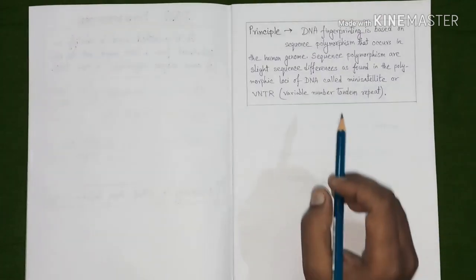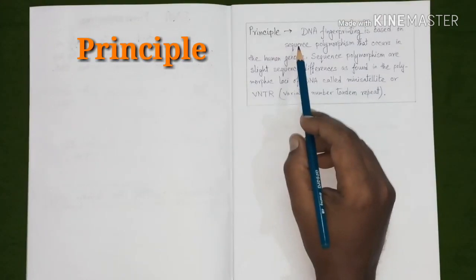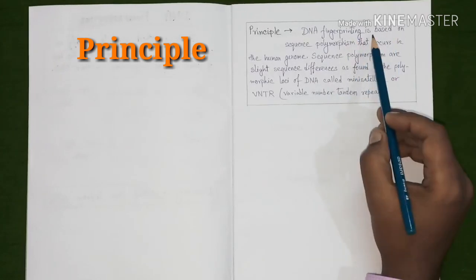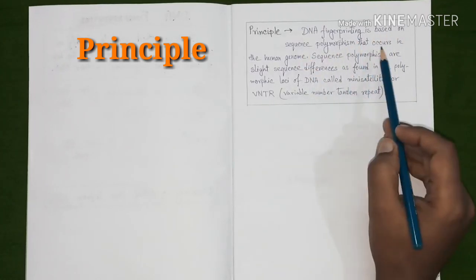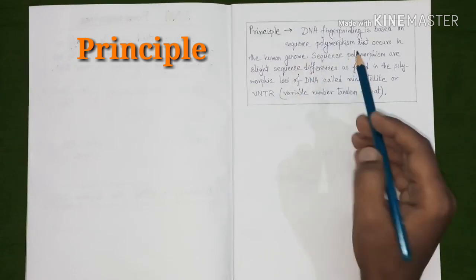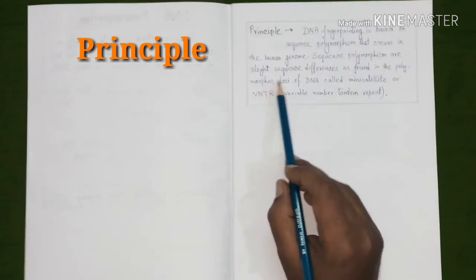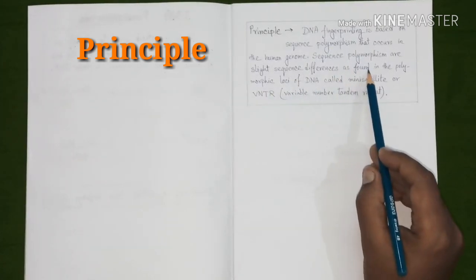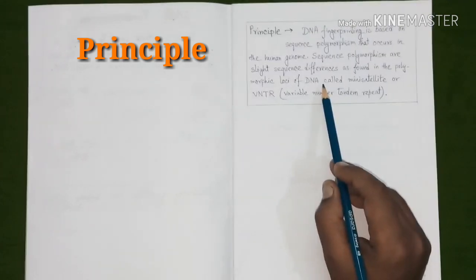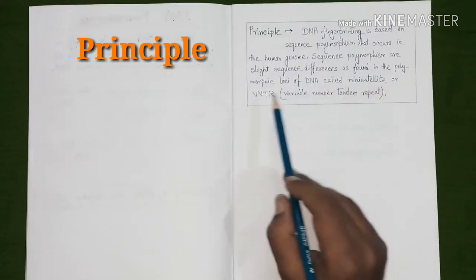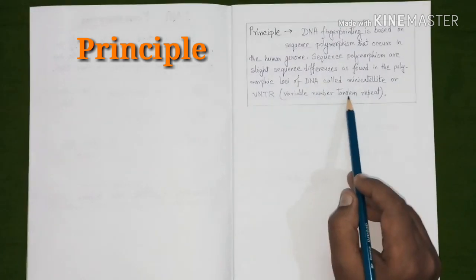Now we will discuss about the principle of this process. DNA fingerprinting is based on sequence polymorphism that occurs in the human genome. Sequence polymorphisms are slight sequence differences as found in the polymorphic loci of DNA called mini-satellite or VNTR, variable number tandem repeat.